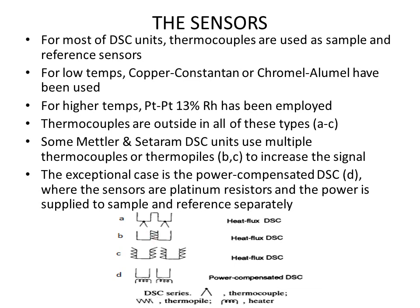Thermocouples are outside the pans, so they are not in direct contact with the sample. Some Mettler and Seiko DSC units use multiple thermocouples, also known as thermopiles, as shown in designs B and C. The purpose of thermopiles is to increase the signal. The one exception is power compensated DSC, shown in design D, where the sensors are platinum resistors and power is supplied to the sample and reference pans separately.